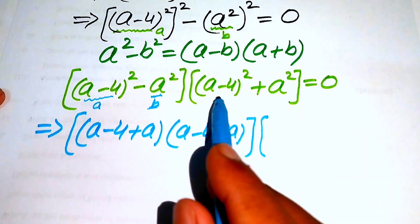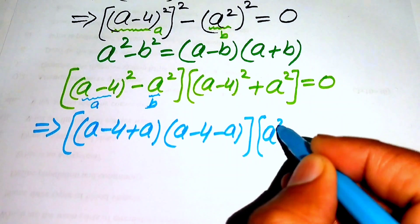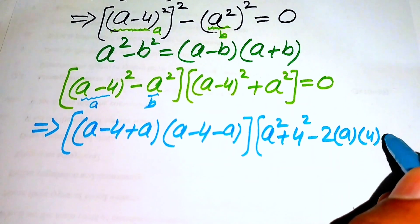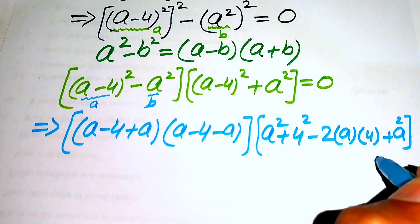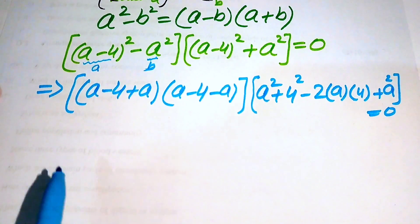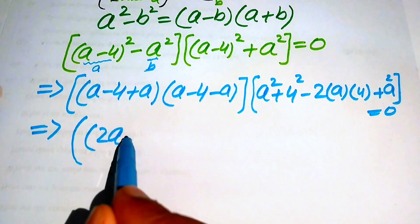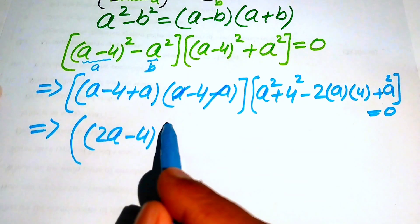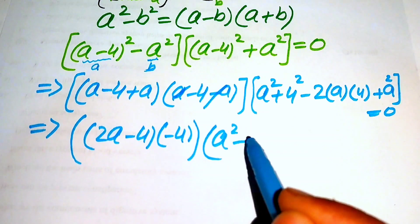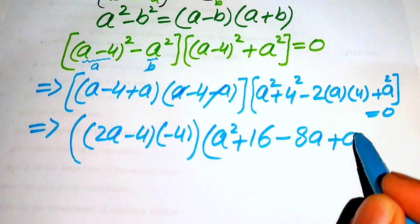We expand the second factor (a - 4)² + a² using the identity (a - b)² = a² + b² - 2ab, which gives a² + 16 - 8a + a². The full equation becomes -4(2a - 4) × (2a² - 8a + 16) = 0.